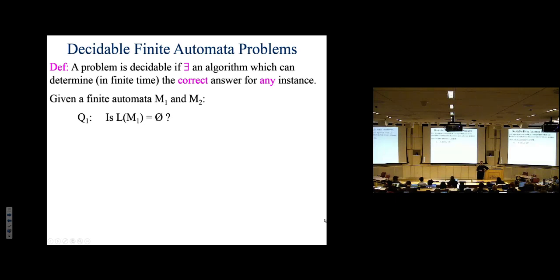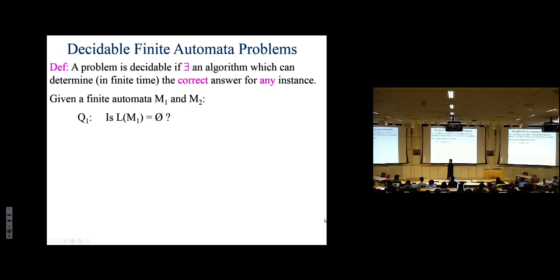One approach: look at the accepting states and check if there's an edge into one — then the language may not be empty. But you could have accepting states and edges into them and the language could still be empty. Remember: the empty language has zero strings. A language containing the empty string has one string — the empty string. They're different.